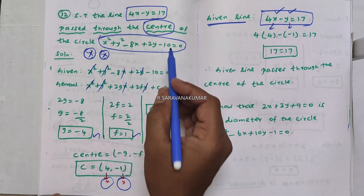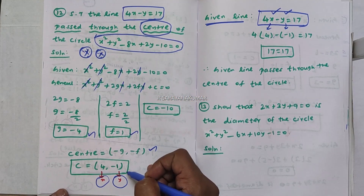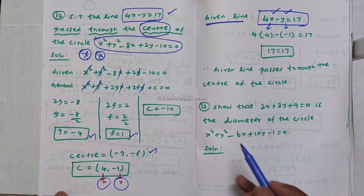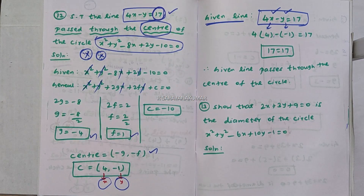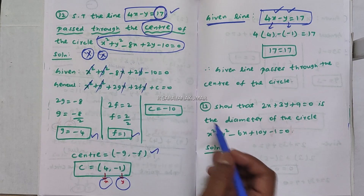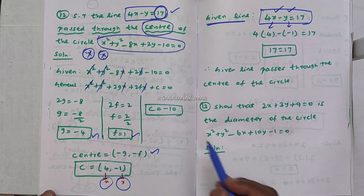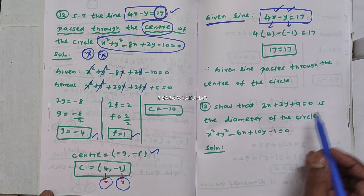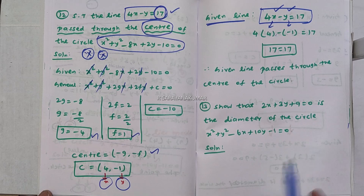If you have a circle equation and a line equation, find the center of the circle using the general form, then substitute the center coordinates into the line equation. If the left-hand side equals the right-hand side, the line passes through the center. Next problem: show that 2x plus 3y plus 9 equal to zero is a diameter of the circle x squared plus y squared minus 6x plus 10y minus 1 equal to zero.